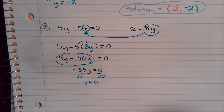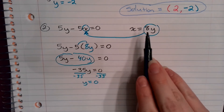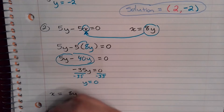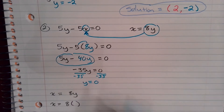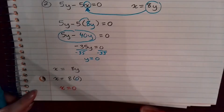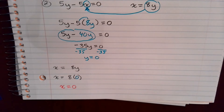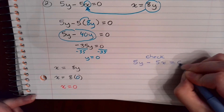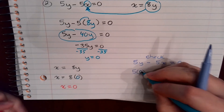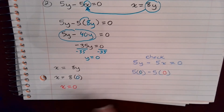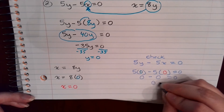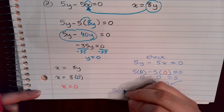Now I substitute y = 0 back in. The easiest equation is x = 8y, so x = 8(0) = 0. Then check using 5y - 5x = 0: that's 5(0) - 5(0) = 0 - 0 = 0. That checks out. So the solution is (0, 0).